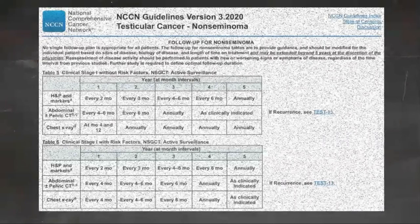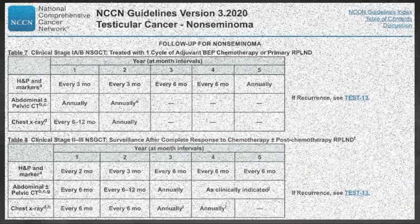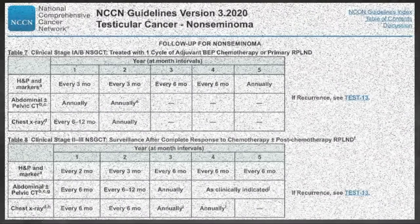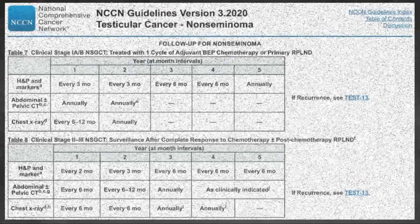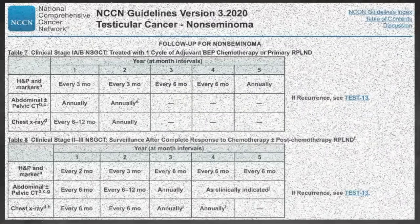Follow-up for non-seminoma stage 2A: The long-term follow-up includes a history and physical examination, serum tumor marker assessment, chest x-ray, and abdominal pelvic CT. In select circumstances, an MRI can be considered to replace an abdominal pelvic CT. The same imaging modality, CT or MRI, should be used throughout surveillance. All imaging is performed with contrast. The frequency of tests varies with the primary treatment modality and post-surgical management received. Chest x-ray may be used for routine follow-up, but chest CT with contrast is preferred in patients with thoracic symptoms.